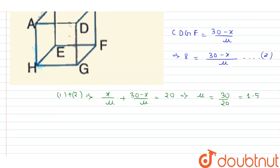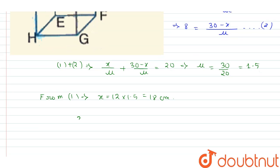From equation 1, we get X equals 12 times 1.5, which equals 18 cm. And 30 minus X equals 30 minus 18, which equals 12 cm.